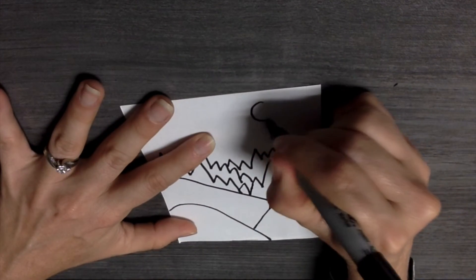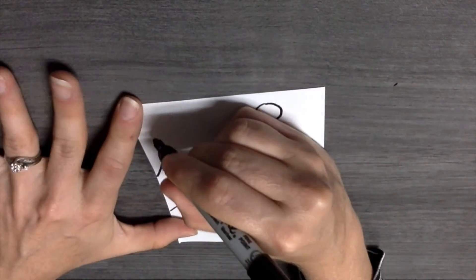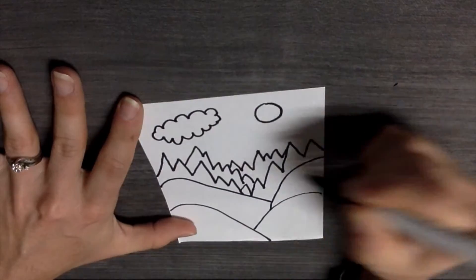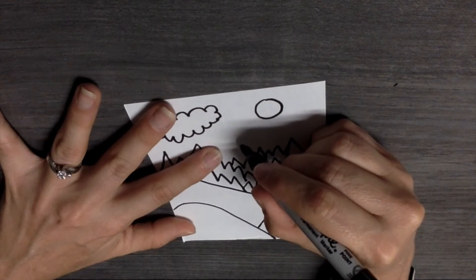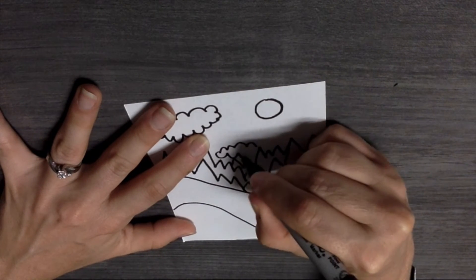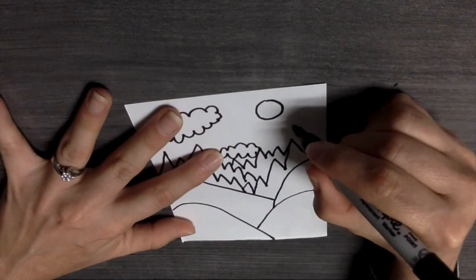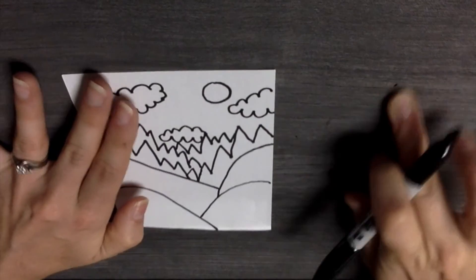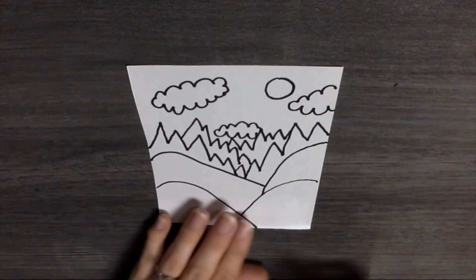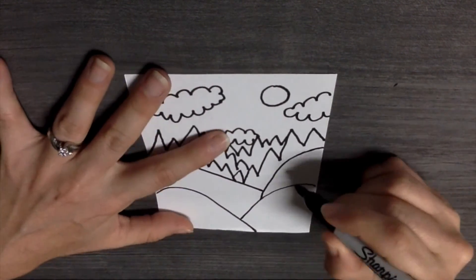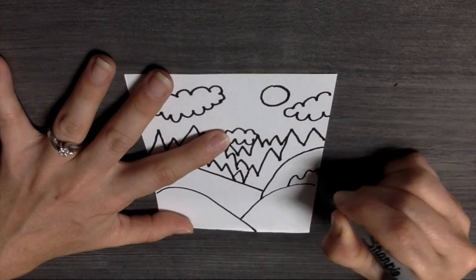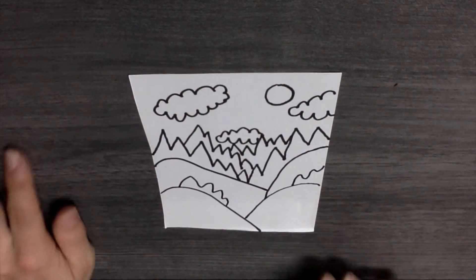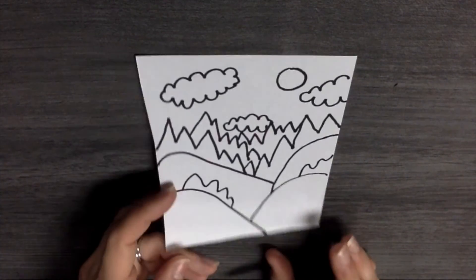Now we're going to add a sun and some clouds. Bumpy lines are great for making clouds. And there I have my mountain. Oh, I forgot the bushes. I'm going to go up and over, up and down. And there I have my mountain landscape.